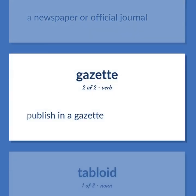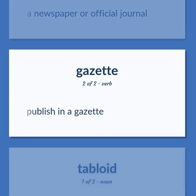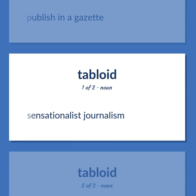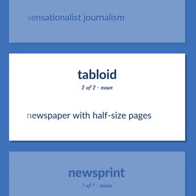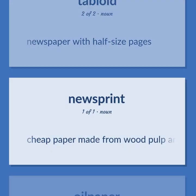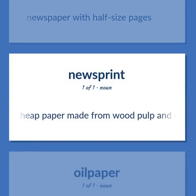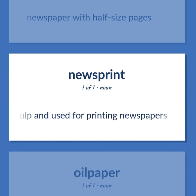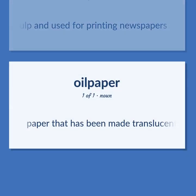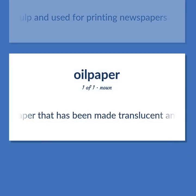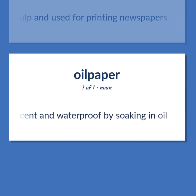Gazette (verb): Publish in a gazette. Gutter press (noun): Sensationalist journalism. Tabloid (noun): Newspaper with half-size pages. Newsprint (noun): Cheap paper made from wood pulp and used for printing newspapers. Oilpaper (noun): Paper that has been made translucent and waterproof by soaking in oil.